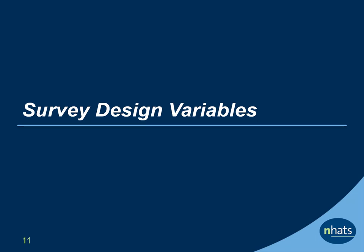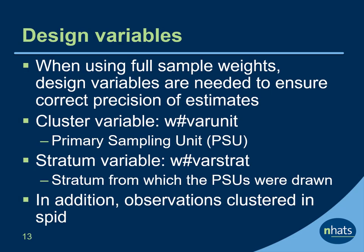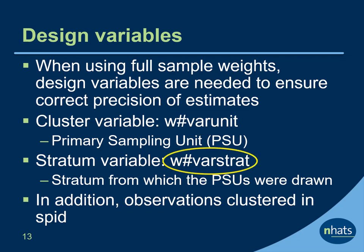Next, let's turn to the NSOC survey design variables. Because the NSOC sample is drawn from NHATS, it is geographically clustered, with primary sampling units drawn from groups or strata. In addition, NSOC caregivers are clustered within NHATS sample persons. For analysts using the full sample weights, survey design variables should be specified to ensure that standard errors or other measures of precision are unbiased. Each round, two variables are included for this purpose: the cluster variable indicating the primary sampling unit, or PSU, is var_unit, and the stratum from which the PSUs were drawn is var_strat. In addition, users may wish to take into account the clustering of NSOC participants within the NHATS participants by specifying SPID as the cluster variable. For examples and additional details, please see the NHATS technical paper, Accounting for Sample Design in NHATS and NSOC Analyses Frequently Asked Questions, which is available from the NHATS website.